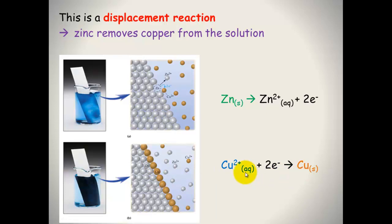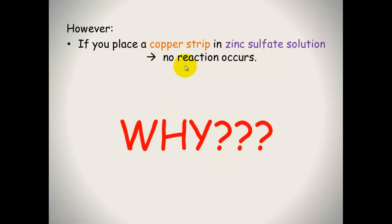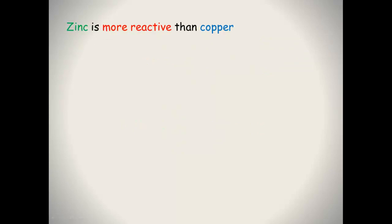So zinc solid in copper sulphate — a reaction happens. However, if you place a copper strip into zinc sulphate solution, no reaction occurs. The question is: why? The reason is that zinc is a more reactive metal than copper.